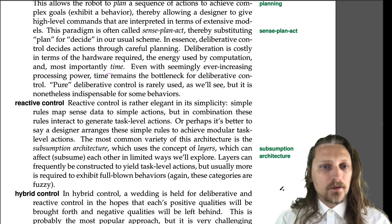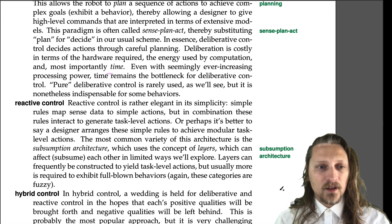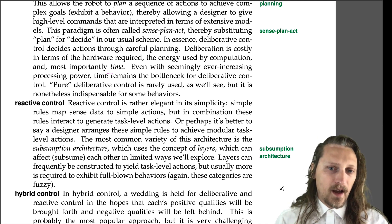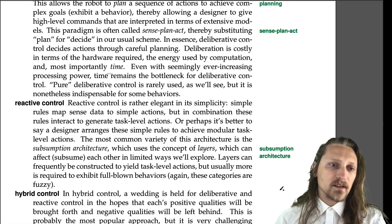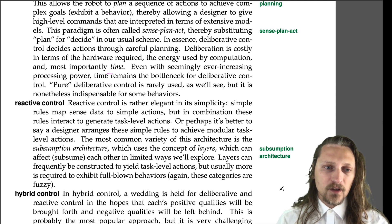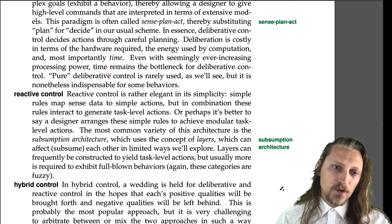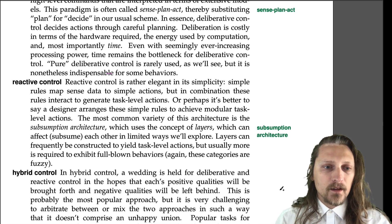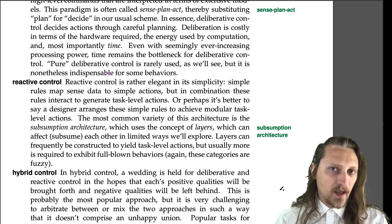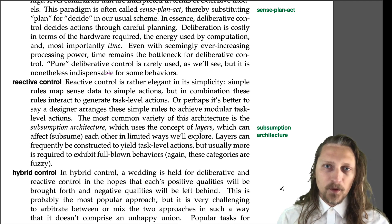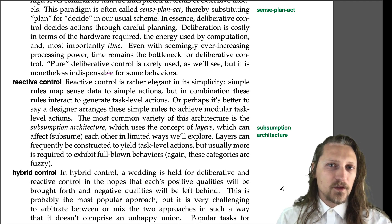Reactive control is rather elegant in its simplicity. Simple rules map sense data to simple actions, but in combination these rules interact to generate task-level actions. A designer arranges these simple rules to achieve modular task-level actions. The most common variety of this architecture is the subsumption architecture, which uses the concept of layers that can affect — subsume — each other in limited ways we'll explore. Layers can frequently be constructed to yield task-level actions, but usually more is required to exhibit full-blown behaviors. Sometimes simple reactive control will exhibit behaviors, and there's a very fuzzy line between reactive control and what we'll soon call behavior-based control.